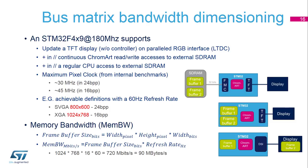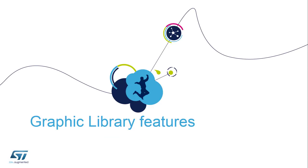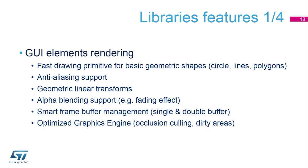The Graphic Library features include graphical user interface element rendering: fast drawing primitives for basic geometric shapes such as circles, lines, and polygons; anti-aliasing support; geometric layout transforms; alpha blending support, for example for fading effects; smart framebuffer management for both single and double buffering; and an optimized graphics engine that supports occlusion culling and dirty areas. Occlusion culling means we do not render objects that are behind other objects, and dirty areas are areas that must be redrawn because something moved or changed in that area.